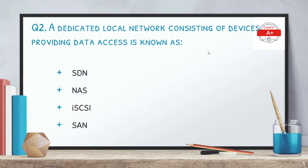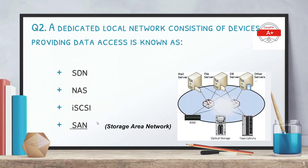Question 2: a dedicated local network consisting of devices providing data access is known as — options are SDN, NAS, iSCSI, and SAN. The correct answer is SAN or storage area network. SAN gives data access or storage access to different servers and devices, such as mail, file, and database servers. The storage devices — optical storage, tape library — provide data access to this network, which is called SAN.